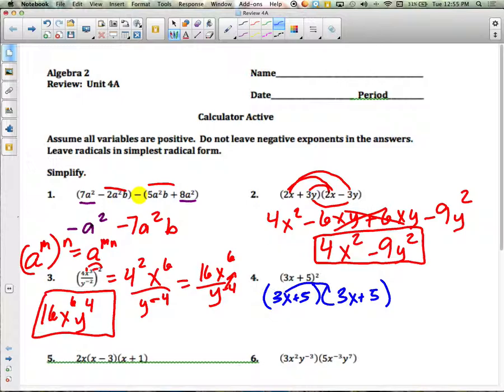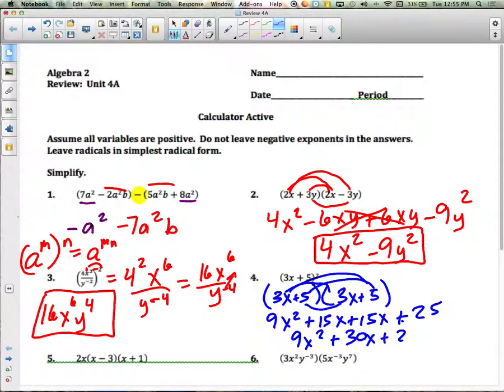So 3x times 3x is 9x squared. 3x times 5 is going to be 15x. Then 5 times 3x is 15x. And 5 times 5 is 25. Then in the middle, you have your like terms. So I'm going to bring down the 9x squared. 15x plus 15x gives me 30x and then plus 25. So we're just going to foil that out. And this will be our final answer right there. 9x squared plus 30x plus 25.